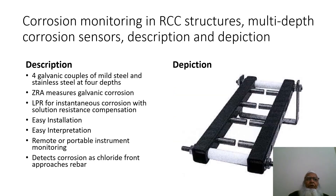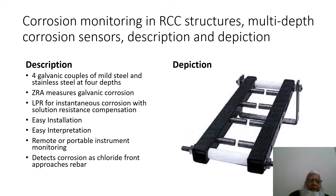Corrosion monitoring in RCC structures with multi-depth corrosion sensors uses four galvanic couples of mild steel and stainless steel installed at four depths at different locations. A zero-resistance ammeter measures galvanic corrosion; LPR with solution resistance compensation provides instantaneous corrosion rate. Installation is easy to interpret; remote or portable instrument monitoring is used. The picture on the right shows how these different probes are installed inside the concrete.